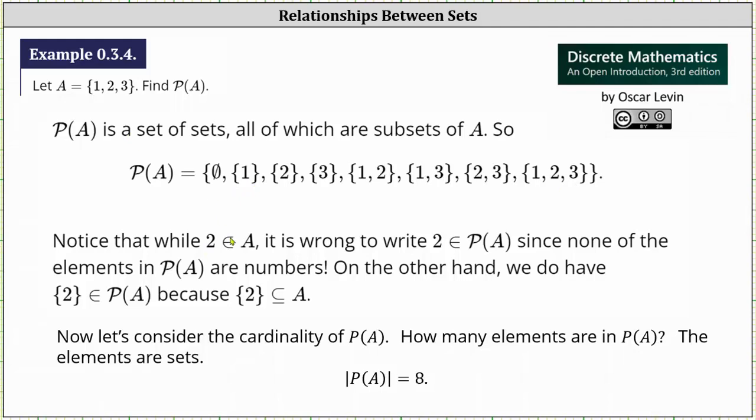Notice while two is an element of A, it is wrong to write two as an element of the power set, since none of the elements in the power set are numbers. All the elements are sets. So it is correct to write the set containing two is an element of the power set of A, because the set containing two is a subset of A.